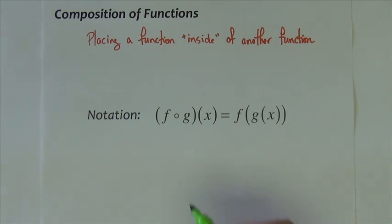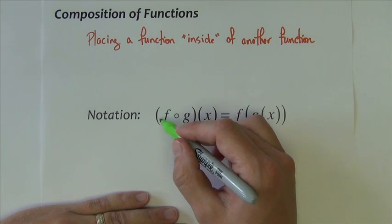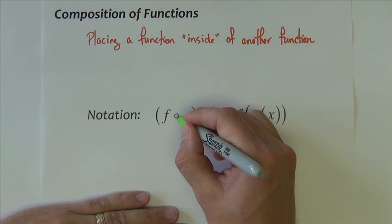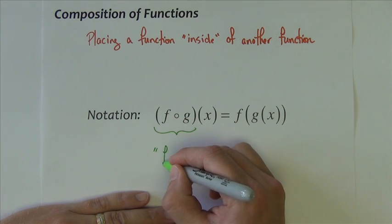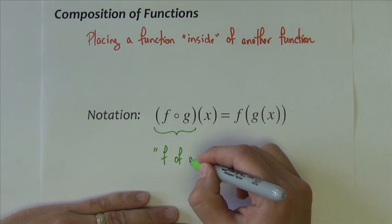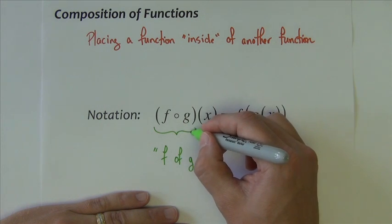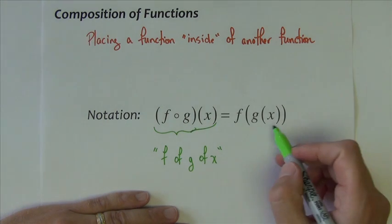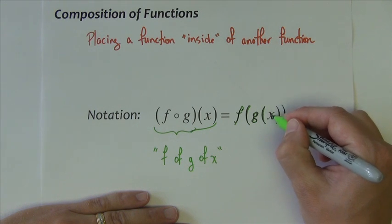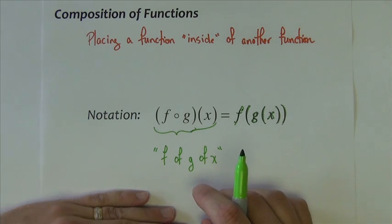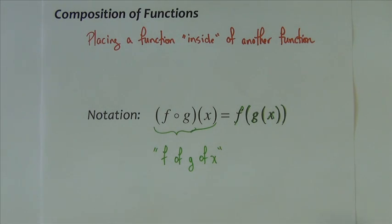Notation-wise, you're going to see this. Looks like it spells the word fog. It doesn't. The functions are f and g. This open circle is the notation that indicates composition. I read this f of g of x. And it looks more like that over here. This is f of g of x. Of course, those functions could be switched. It could be g of f of x. And we'll see that in the example slides.